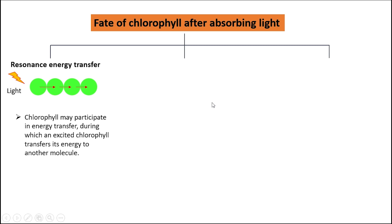Second, it can undergo photochemistry or photochemical reaction. In this process, excited chlorophyll can donate its electron.